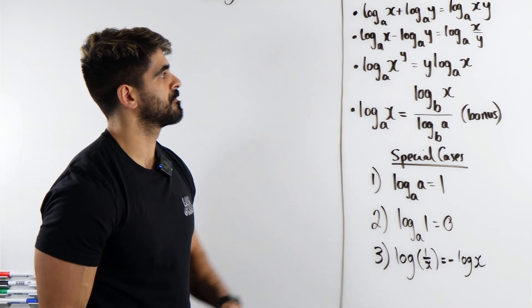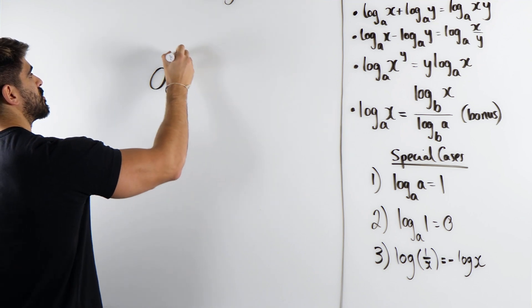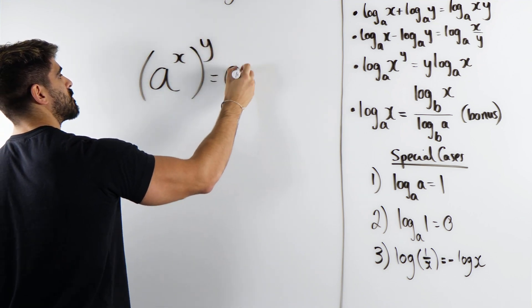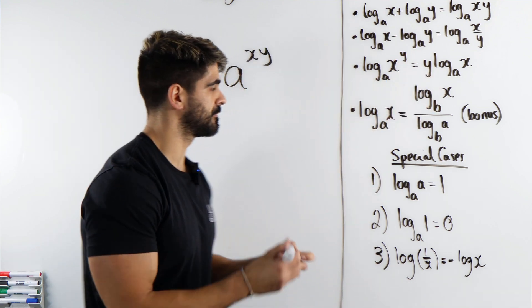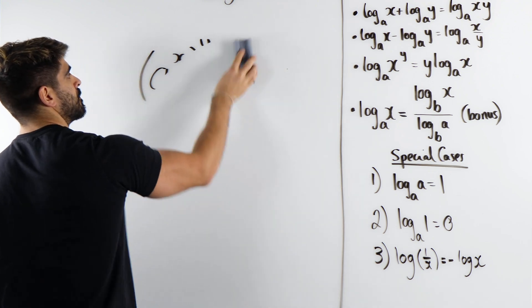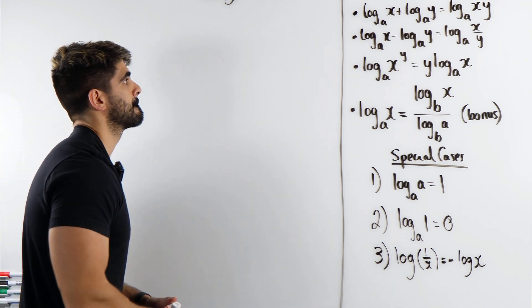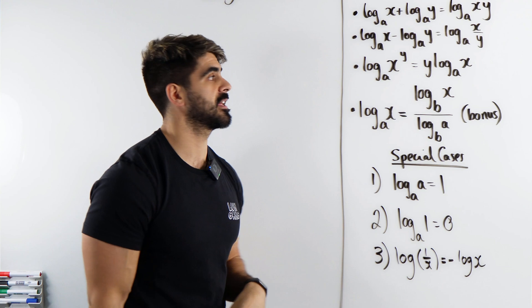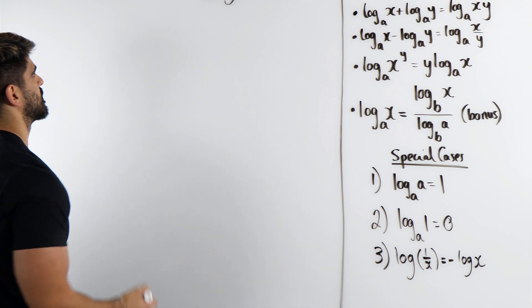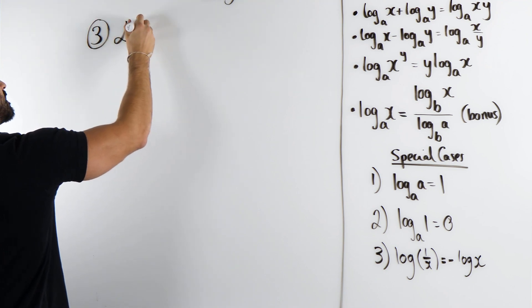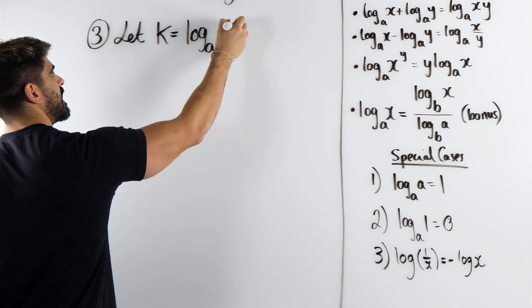The next one I'm going to prove is this third one. That's the power rule. That is basically saying when you take a number raised to a power and raise it to another power, we multiply the powers. So we turn what is a power into a multiplication. So how do we do this? I'm going to let this equal another letter. I'm going to use K this time. So this is the third rule. So I'm going to let K equal log base A of X to the power of Y.